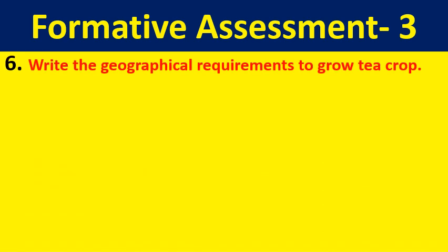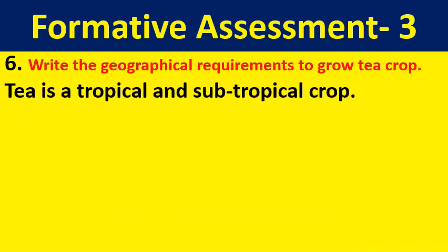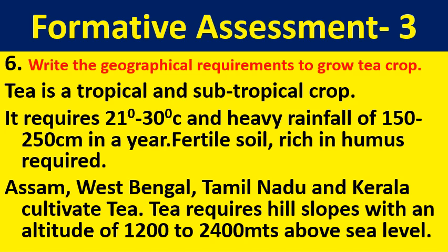Write the geographical requirements to grow tea crop. Tea is a tropical and subtropical crop. It requires 21 to 30 degrees Celsius and heavy rainfall of 150 to 250 centimetres in a year. Fertile soil rich in humus is required. It grows well from 1200 to 2400 metres above sea level. Assam, West Bengal, Tamil Nadu, and Kerala cultivate tea in large quantities.